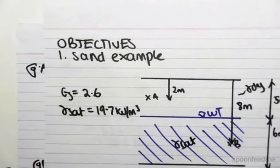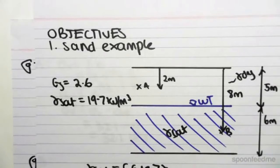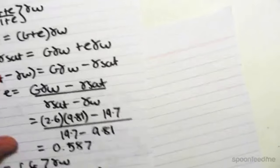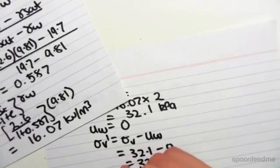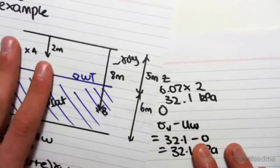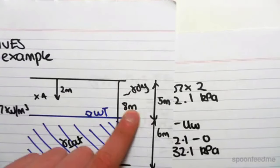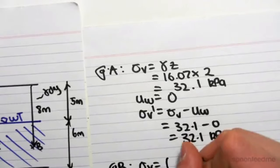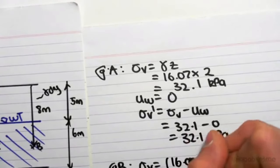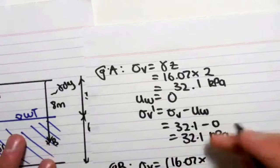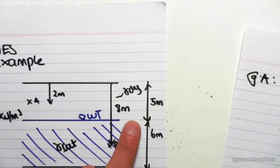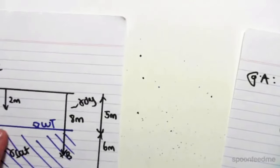At B, let's first find the total stress. So the total stress is going to be a combination of gamma dry. So the first 5 meters, it's all dry. So gamma dry was 16.07 times by that first depth is 5 meters.